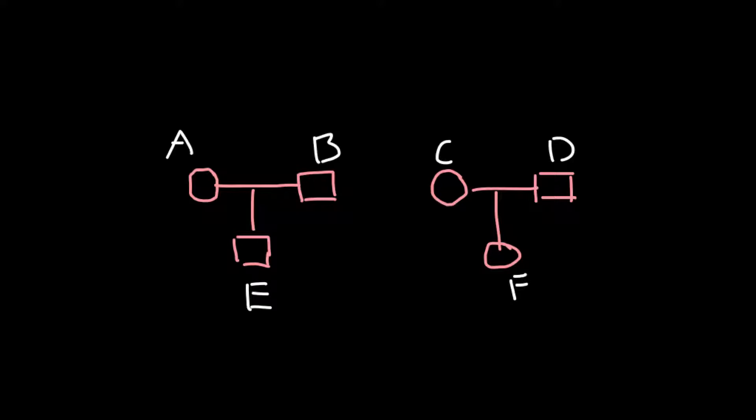Imagine that we have two families. Here is one family on the left, here is another family on the right, and we know that individuals E and F are full siblings.